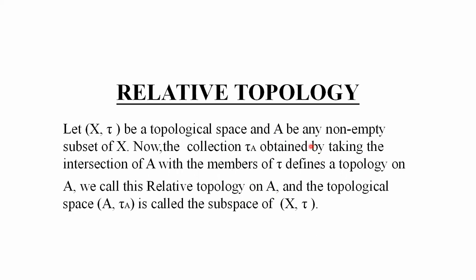مطلب یہ کہ اگر ہمیں کوئی topological space given ہے اور ساتھ ہی کوئی subset given ہے X کا، تو اگر ہم τ_A collection لیتے ہیں — جو ہمارے پاس given topology τ ہے اس کے ہر member کے ساتھ ہم A کا intersection لیں گے — اور جو class بنے گی اسے ہم relative topology on A کہیں گے۔ اور topological space (A, τ_A) کو subspace of X کہا جاتا ہے۔